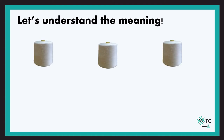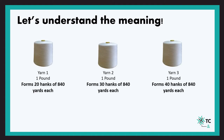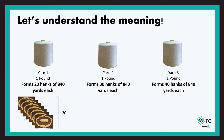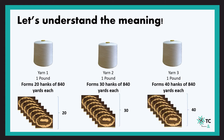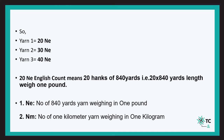Let's see an example to understand the English count system. Assume there are three sets of yarns — yarn 1, yarn 2, and yarn 3 — all of them weighing one English pound. The length of yarn in each set varies: yarn 1 forms 20 hanks of 840 yards each, yarn 2 forms 30 hanks of 840 yards each, and yarn 3 forms 40 hanks of 840 yards each. So the count of yarn 1 in indirect system will be 20 Ne, yarn 2 will be 30 Ne, and yarn 3 will be 40 Ne.